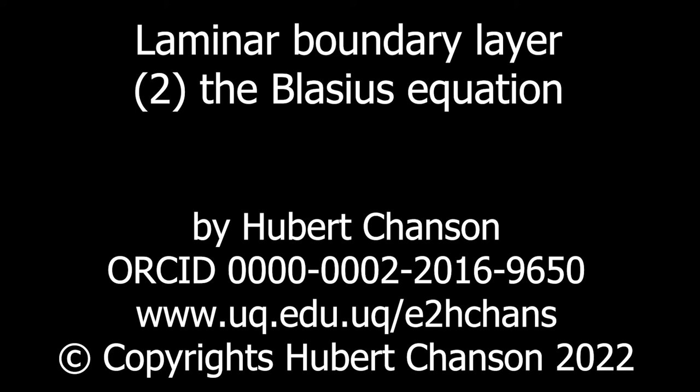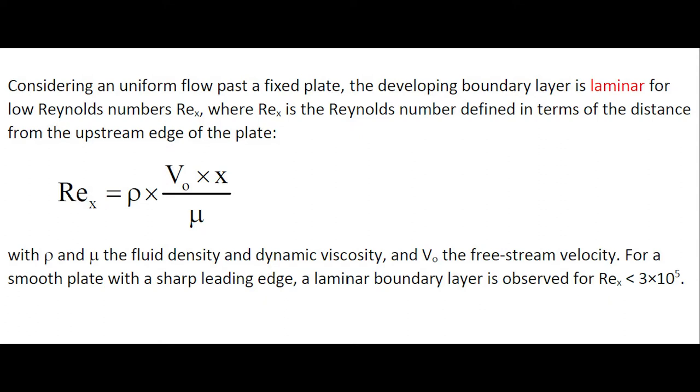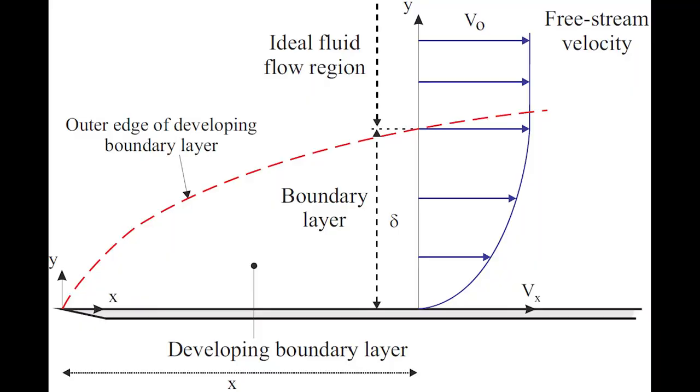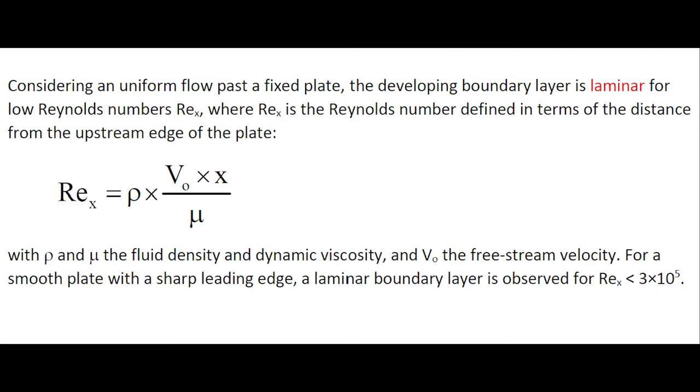Considering a uniform flow past a fixed plate, the developing boundary layer is laminar at low Reynolds number. With the definition shown here, for a smooth plate with a sharp leading edge, a laminar boundary layer is observed when the Reynolds number Rex is less than 3 times 10 to the 5.